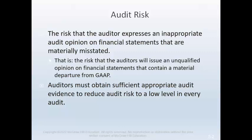There is always a possibility, called audit risk, that the auditors will issue an unmodified opinion on financial statements that contain a material departure from GAAP. In order to lessen this risk to an acceptably low level, the auditor should obtain sufficient appropriate audit evidence. The quantity of audit evidence needed is affected by both the risk of misstatement — the greater the risk, the greater the audit evidence — and the quality of the evidence; the lower the quality, the more evidence is required.